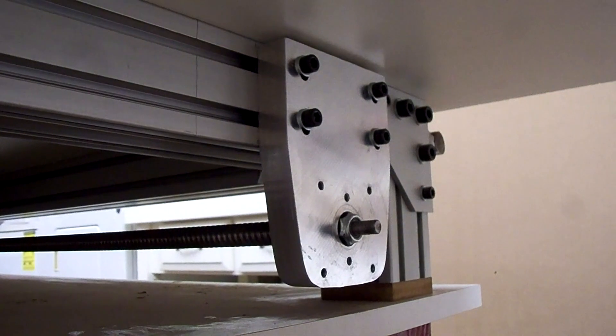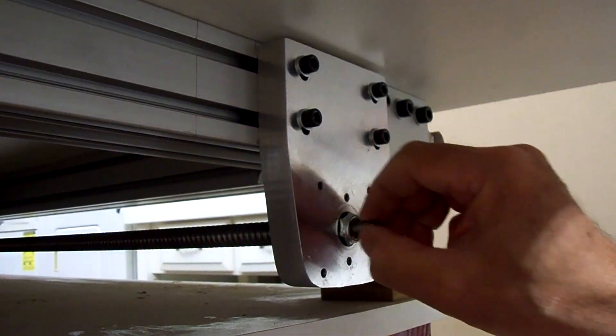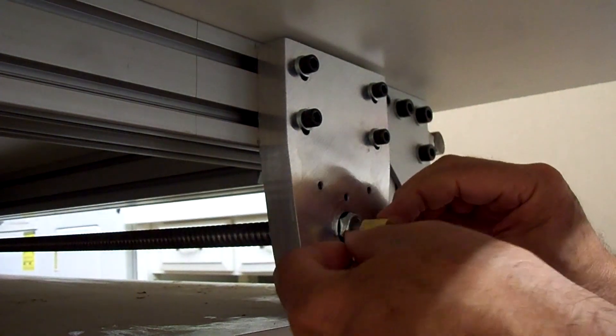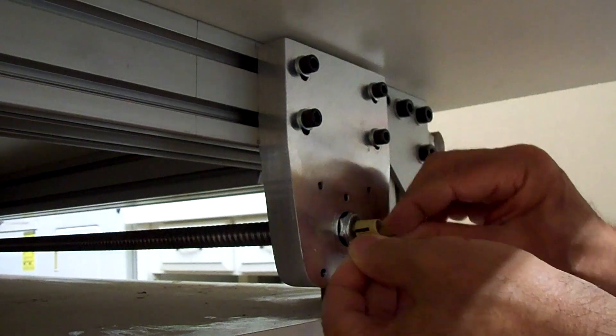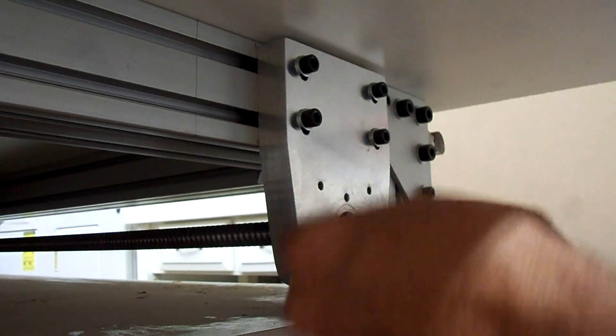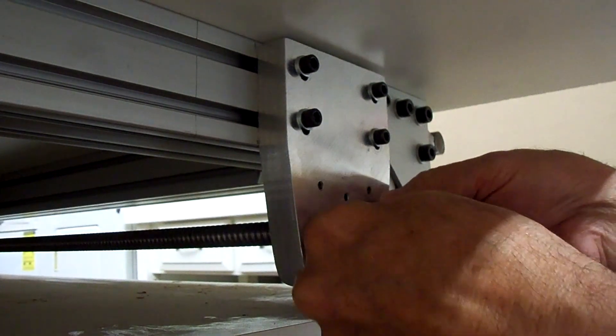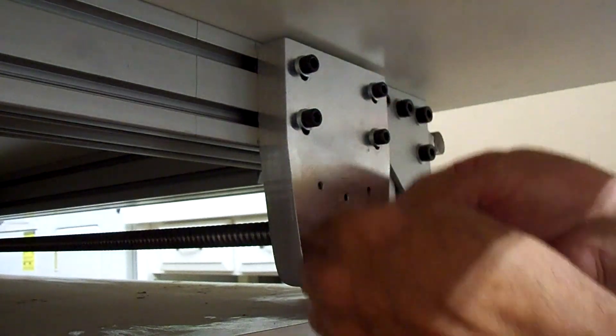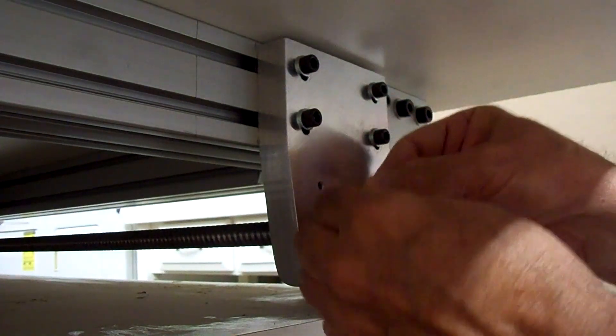I'm going to buff the end of this shaft a little bit with some 400 grit sandpaper. It feels just a little bit rough. This is an 8 millimeter shaft and the shaft on the motors is a quarter inch, so I had to get a 6.35 millimeter to 8 millimeter, which the 6.35 is the same as a quarter inch.